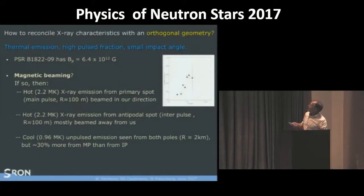So indeed, you see then two components. One from the primary spot and one from the interpoles with the same radius. And then a cool component. You see from both poles, 30% more from the main poles than the interpoles.